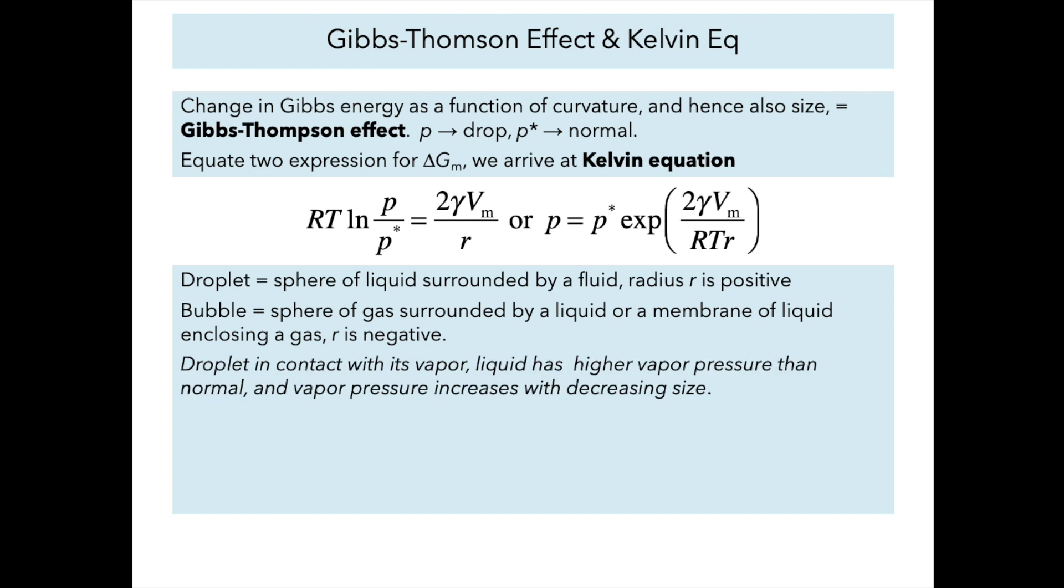Big conclusion: droplets in contact with their vapor, the liquid inside the droplet has a higher vapor pressure than normal, and that vapor pressure increases with decreasing size. This becomes really important when we hit the nanoscale. Large deviations start to be found when we get to about 100 nanometers and below.